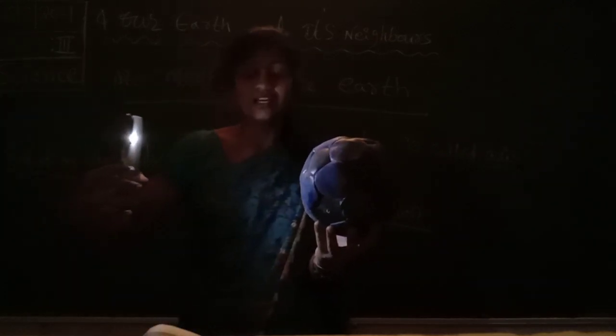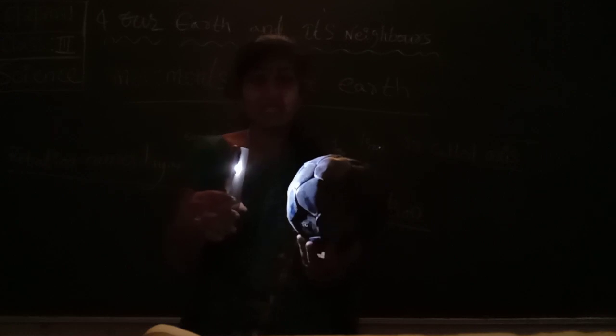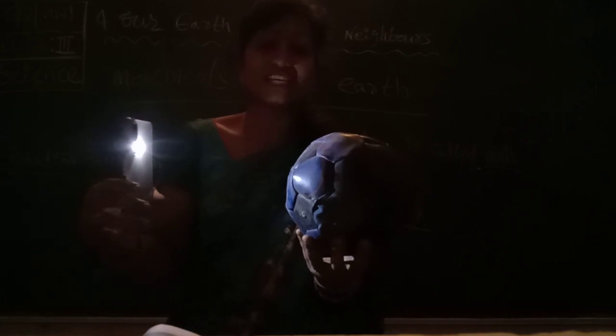Take a rubber ball and a torch. When you turn on the torch, only half of the ball is lit up. The back side of the ball is not lit — light is not falling on that side. Half of the ball has light — that is the day. The back side not receiving light — that is the night. This is the sun, and this is the Earth. That is the experiment.